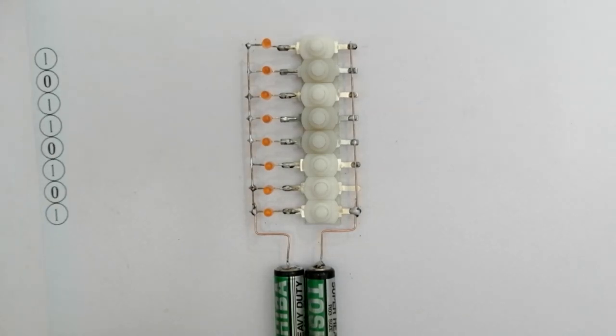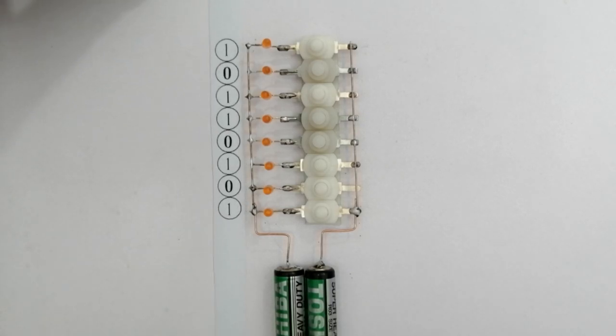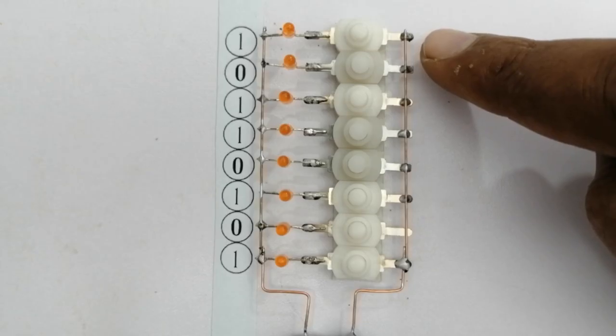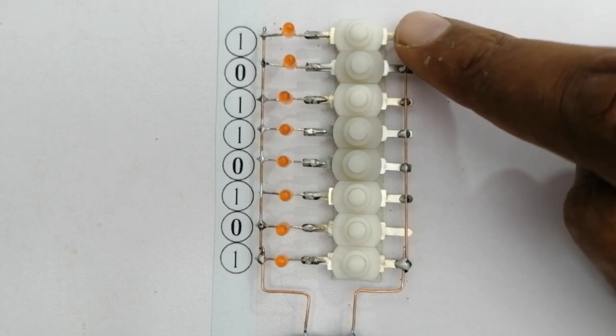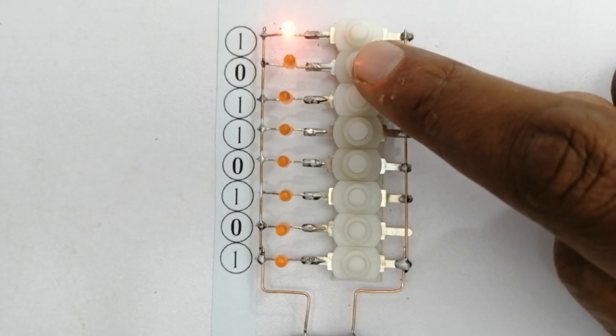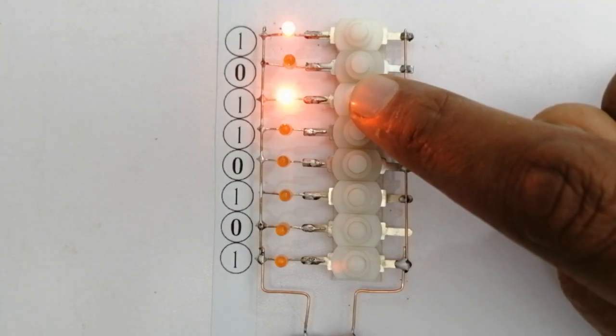Data is coming from the CPU. We now store this data on RAM. We have started saving data. The first value is one, so we will turn on the switch. It is zero after that, we will turn off the switch. There is one after that, we will turn on the switch.